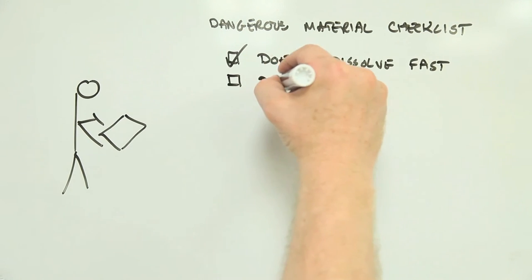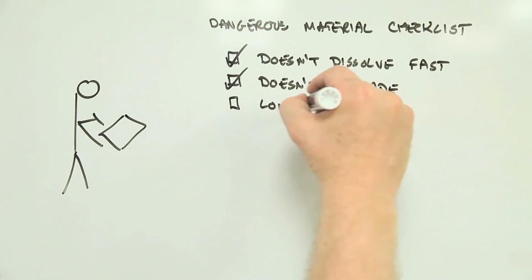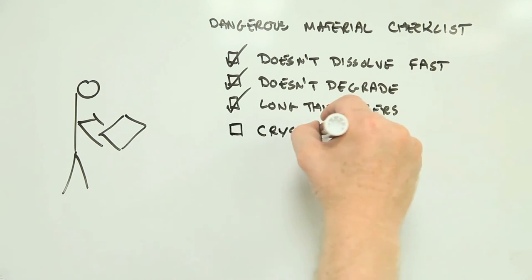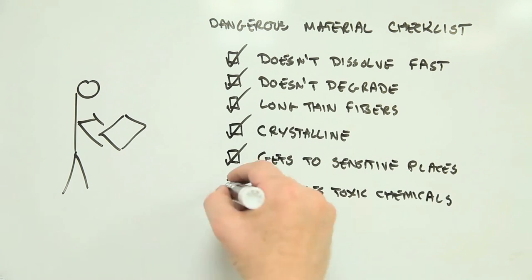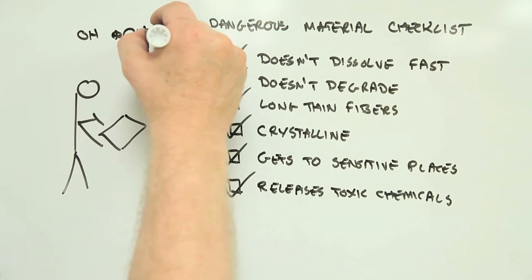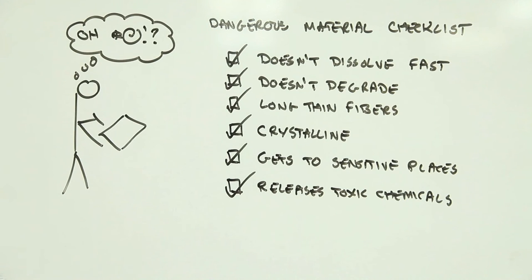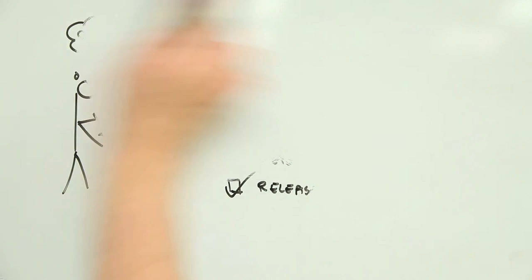But there are some warning signs we've learned to look out for in materials that our bodies don't handle so well. Particles that get into us and don't dissolve or degrade easily aren't great news, for instance. Neither are particles that are long and thin, like fibres, or crystalline, or small enough to slip into places they shouldn't, or materials that release known toxic chemicals. These are all characteristics that scream watch out if they're present in a brand new, never before tested advanced material.